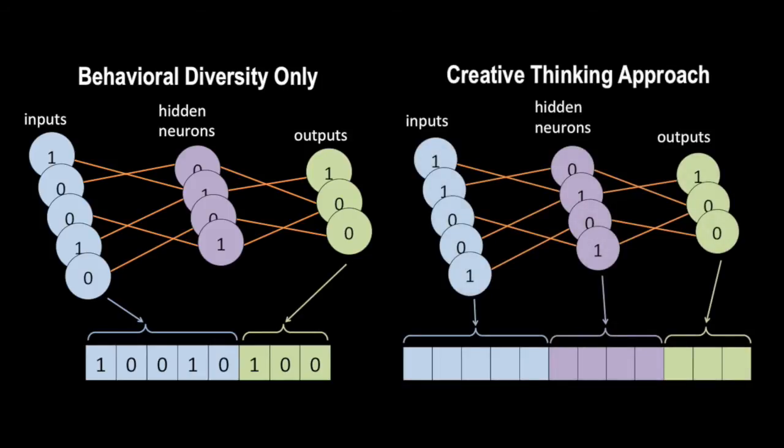We introduce a new method in which we additionally store the firing patterns of hidden neurons. This means that diversity in hidden neurons will be recognized in addition to diversity in sensor and motor neurons, effectively rewarding novel thinking in addition to novel behavior. We call this the creative thinking approach.